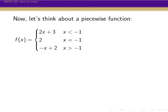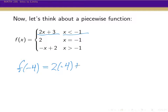So now let's think about a piecewise function. In a piecewise function, the rule we use depends on what the x values are. For this piecewise function: when x is less than minus 1, we use the line 2x plus 3; if x equals minus 1, the value is just 2; and if x is bigger than minus 1, we use minus x plus 2. So if I wanted to find f(minus 4): minus 4 is less than minus 1, so I use 2 times minus 4 plus 3, which is minus 8 plus 3, giving me minus 5.